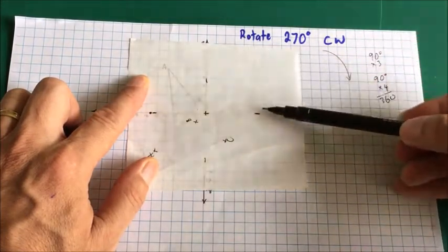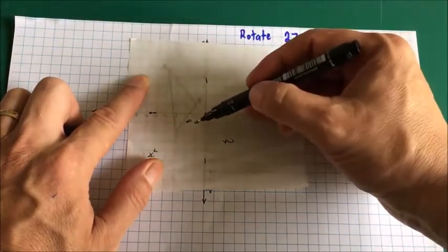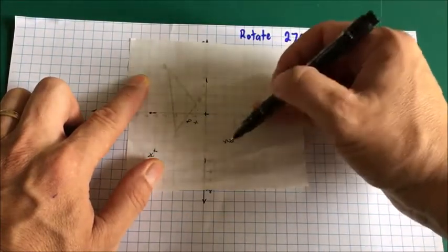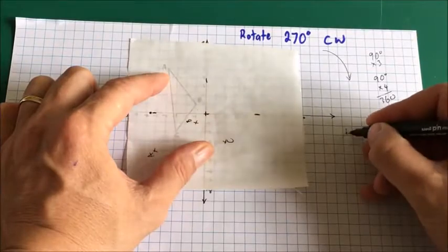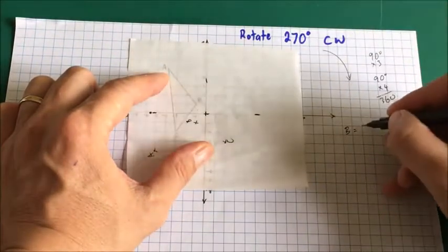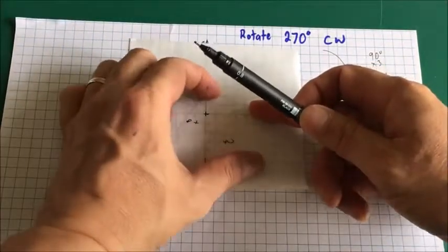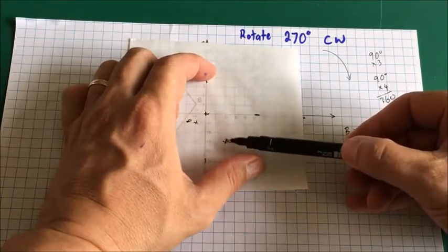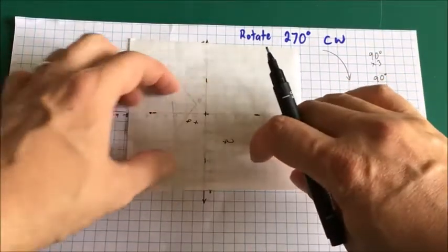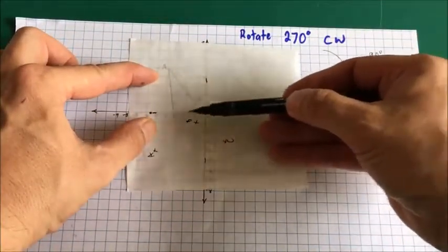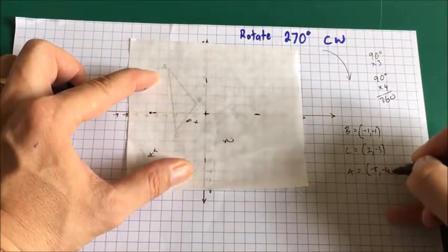So I started here, got to here, got to here, went to here - that is three 90-degree turns. Now all I have to do is take note of where B, A, and C are. Because it's tracing paper I can see through it and get the coordinates. B is at (-1, -1). C is over here at (2, -3). And A is way over here at (-5, -4).